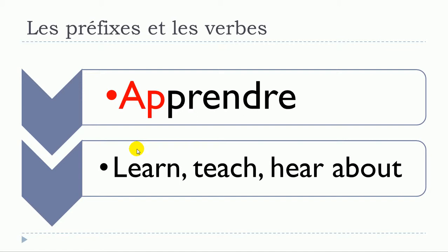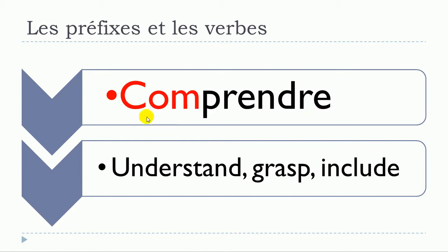The first prefix is AP- — you don't pronounce the double P — giving you APPRENDRE. Here is what it means: APPRENDRE.